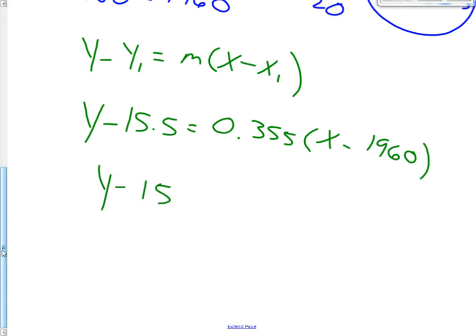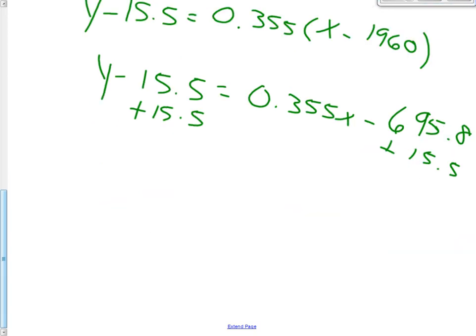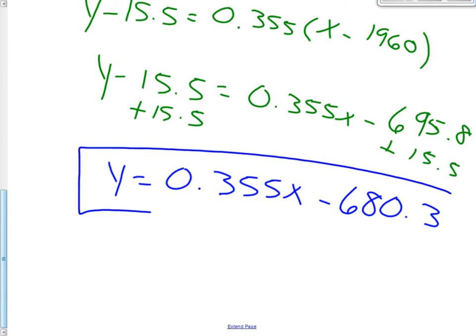I want our answers in slope-intercept form, so let's change this into slope-intercept form. First, let's distribute, getting rid of those parentheses. So that equals 0.355x minus 1960 times 0.355 is the number 695.8. So now let's add this 15.5, and we have ourselves slope-intercept form. So y equals 0.355x minus 680.3. And here's my answer in slope-intercept form.